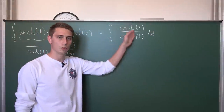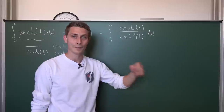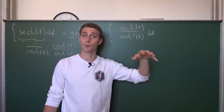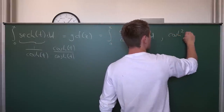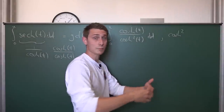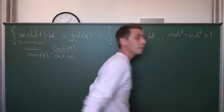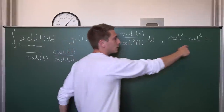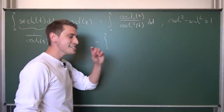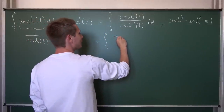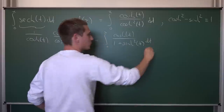Now, how can we modify this expression to get an elementary antiderivative? There's a hyperbolic version of the Pythagorean identity: cosh²(χ) minus sinh²(χ) equals 1. This is helpful because we have cosh² in the denominator. Adding sinh² to both sides, we can rewrite the integral from 0 to x of cosh(t) over (1 + sinh²(t)) dt.